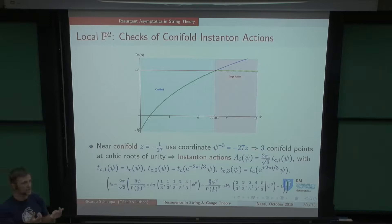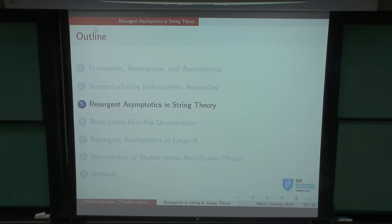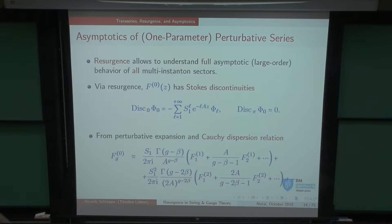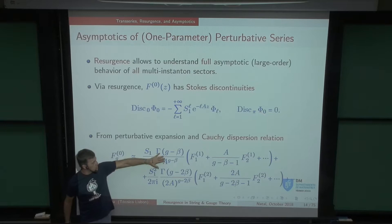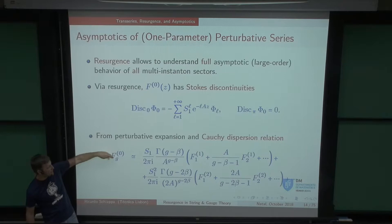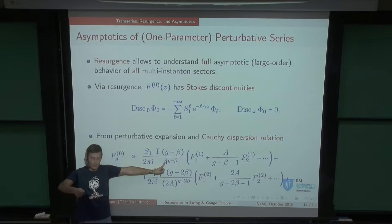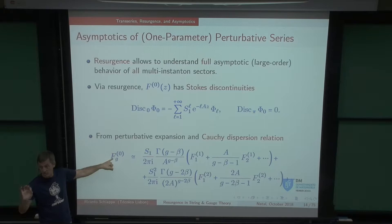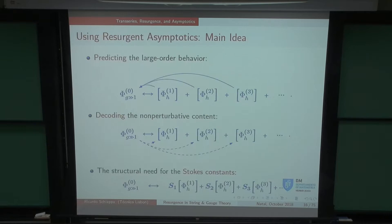So, having computed the perturbative to genus 112 and the first few instanton sectors to genus ~20-30, what can we do? In local P2 there's a large-radius point and a conifold point — singularities in moduli space — and I expect the instanton actions to be suitable periods near these singularities. A useful coordinate is psi rather than z. There are three conifold points in psi with instanton actions computed via Picard-Fuchs.